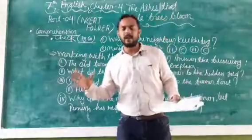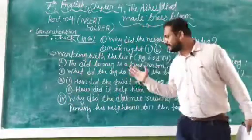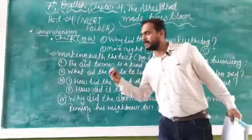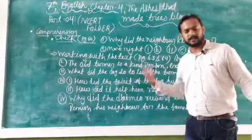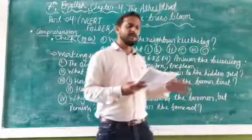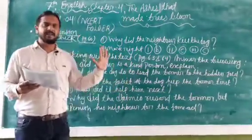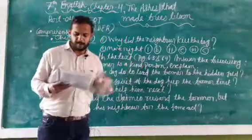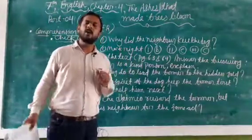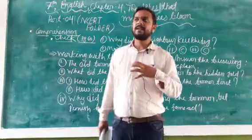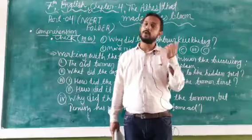On the basis of that idea, it will be very easy to understand the concepts coming in the question answers. Question number one: firstly we are solving comprehension check — NCERT page number 60, keep open. Why did the neighbors kill the dog? Why did the wicked neighbor kill the dog?